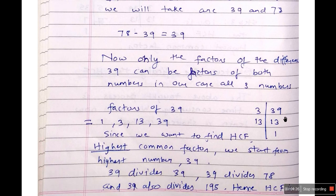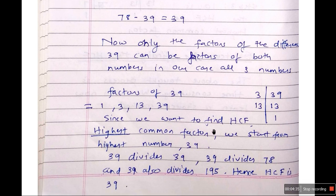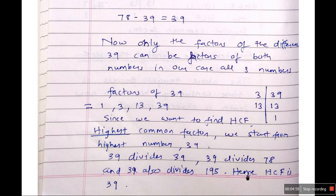Factors of 39: divide 39 by 3, you get 13; divide 13 by 13, you get 1. So the factors are 1, 3, 13, and 39. Since we want the HCF — highest common factor — we start from the highest number, which is 39. Does 39 divide 39? Yes. Does 39 divide 78? Yes. Does 39 divide 195? Yes. Hence, the HCF is 39.